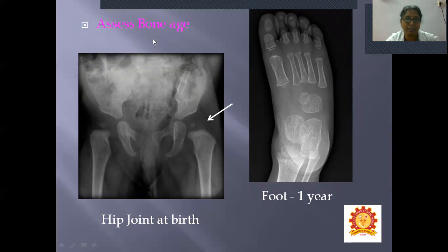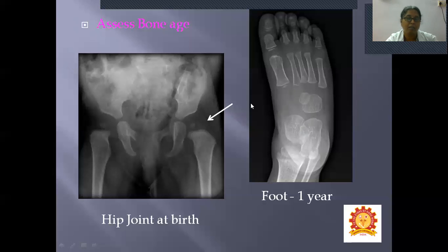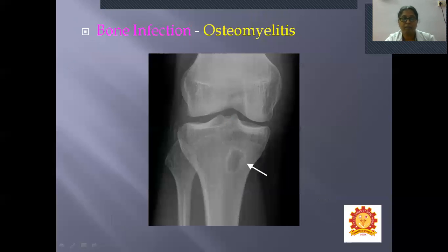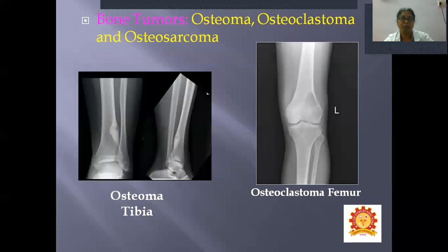Third use: to assess bone age. The X-ray of a child's hip joint at birth will not show the head of the femur. In the X-ray of a child at one year, not all tarsal bones can be seen — only four are present. Fourth use: to confirm bone infection. Infection of a bone is called osteomyelitis, which appears as an osteolytic lesion in the X-ray.